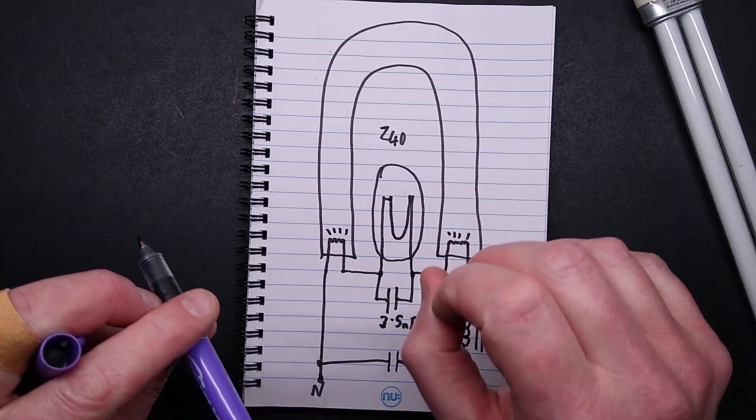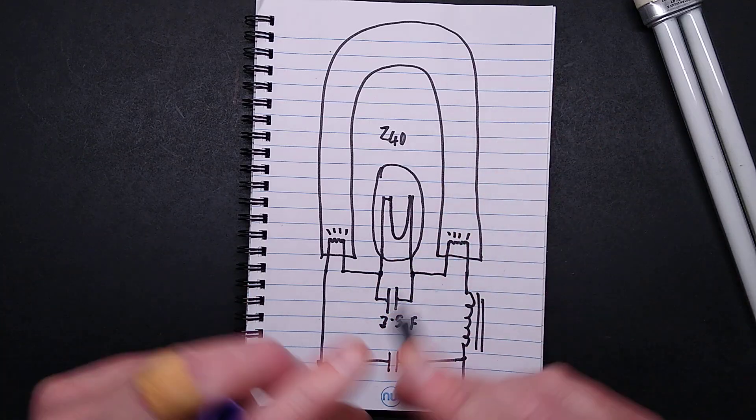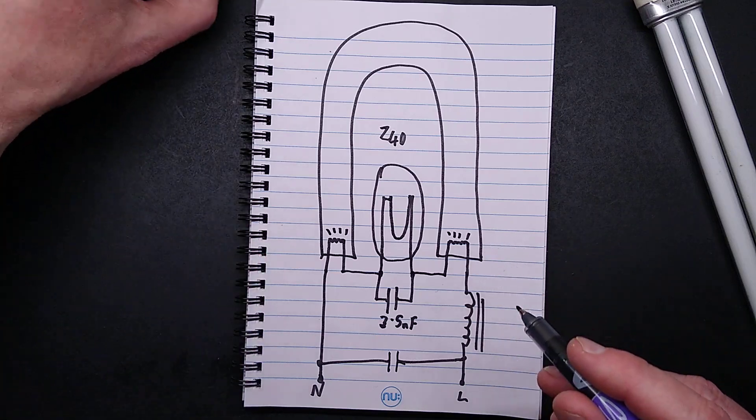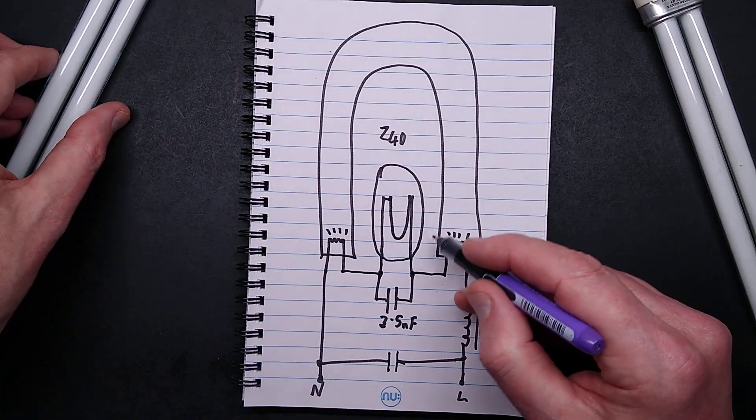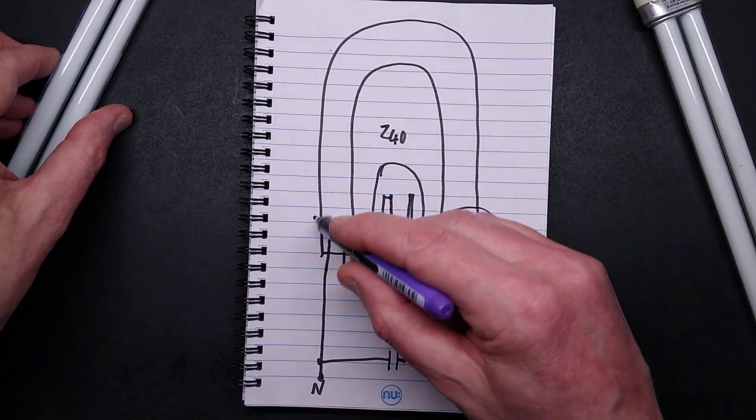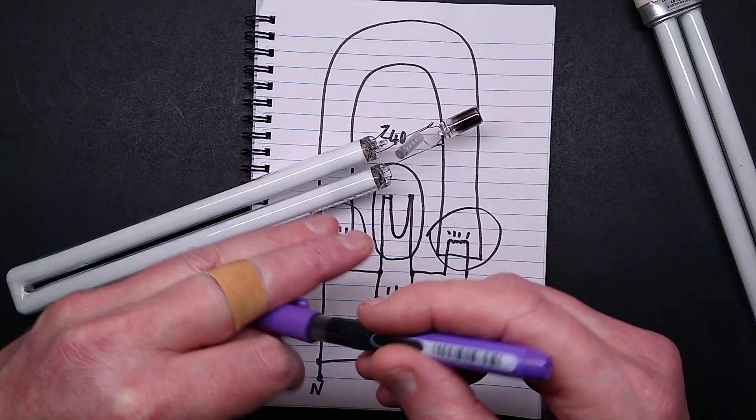The other thing you'll often see, particularly with tubes like this, is it just glowing orange at the end. If it's basically just glowing orange around the end here, there's a good chance the starter has welded.